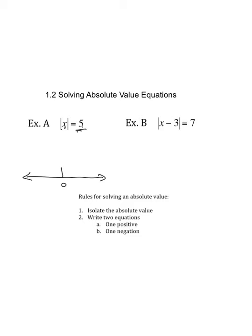What are all the numbers that are 5 units away from 0? Negative 5 and positive 5. Negative 5 and positive 5.